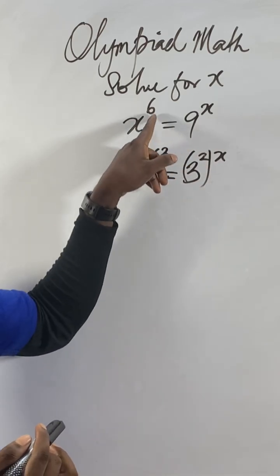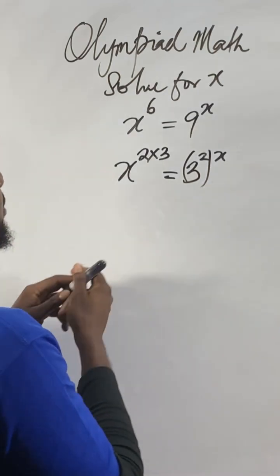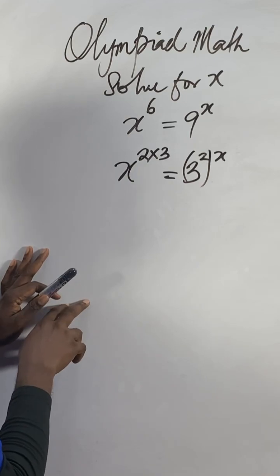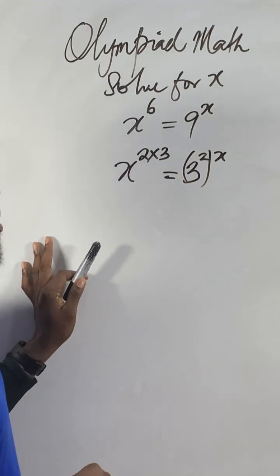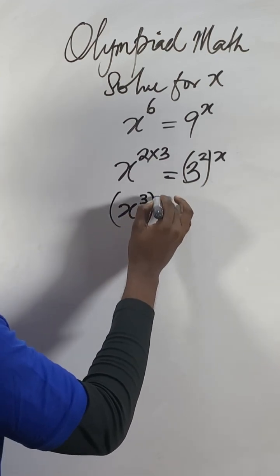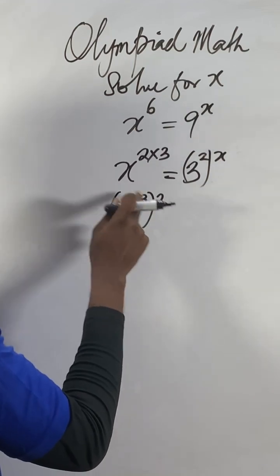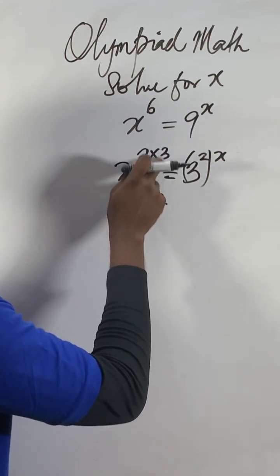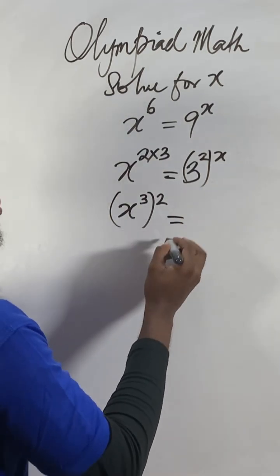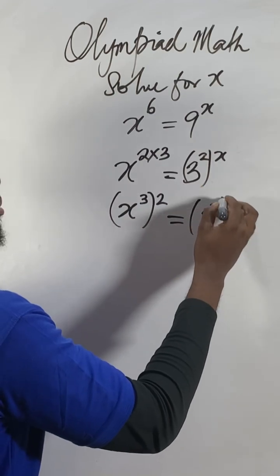Two times three, and this is x times this one. I never do anything — the same thing I still didn't do. So what I will do now at this point: I will swap things. If I put this one as x to the power of three, then carry two and put it aside. Three times two will give you six, two times three — so this thing and this thing are now the same. Equal to three to the power of — I will switch this one — x, all squared.